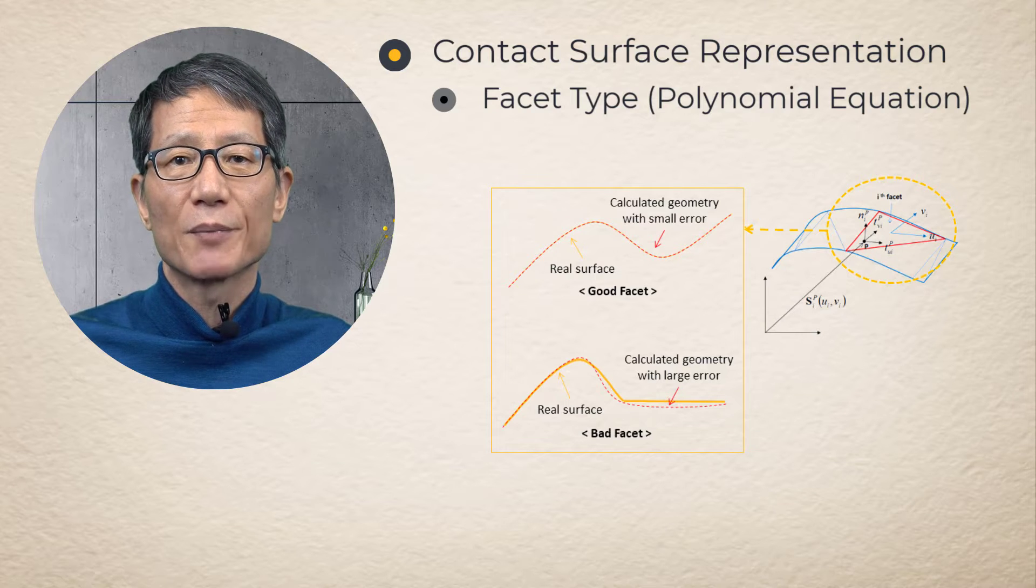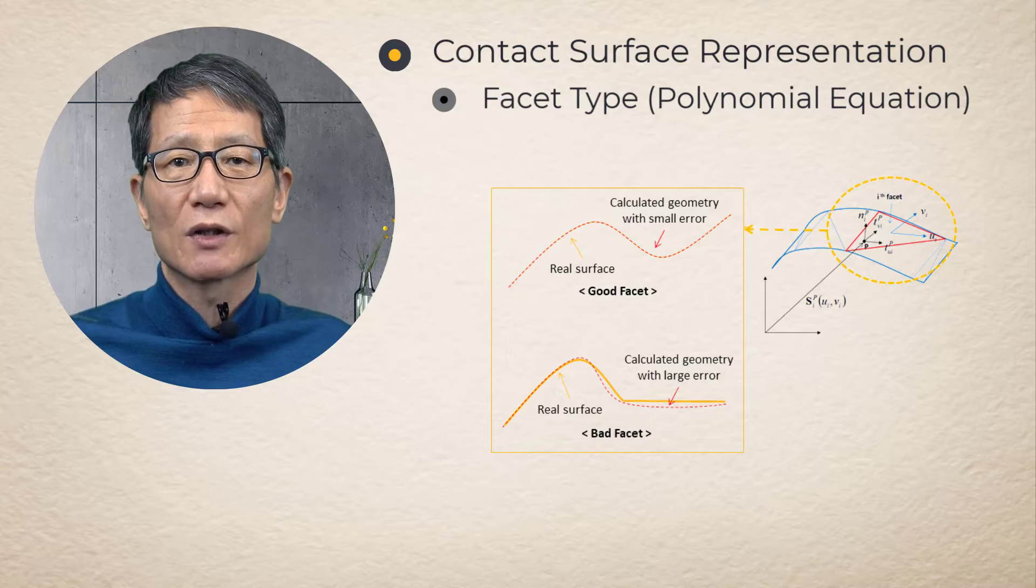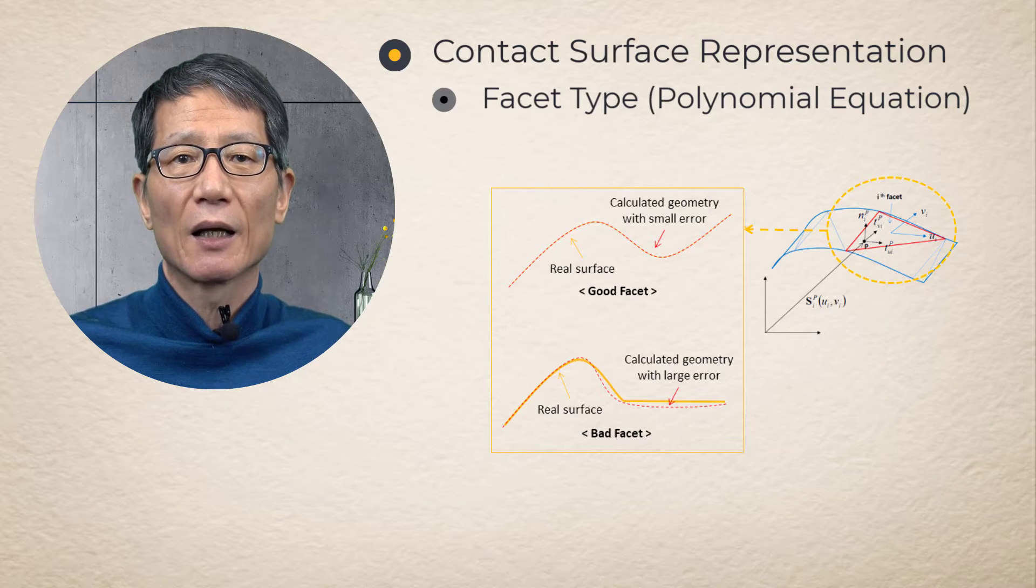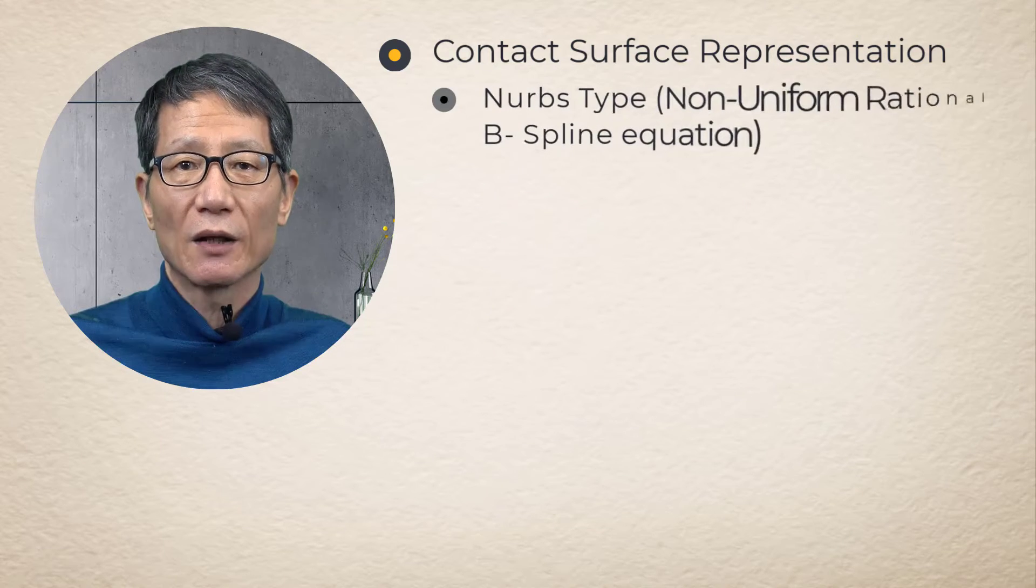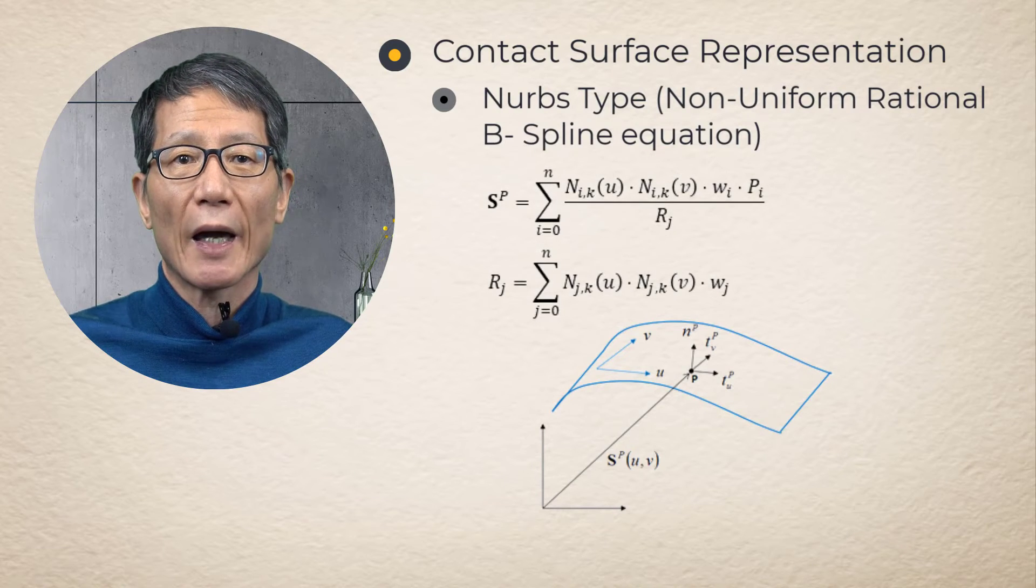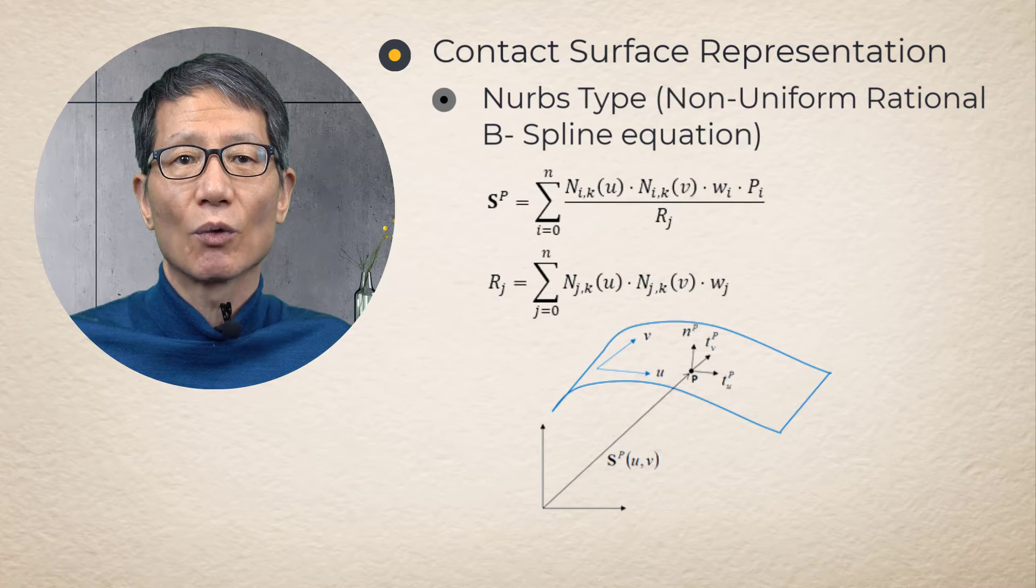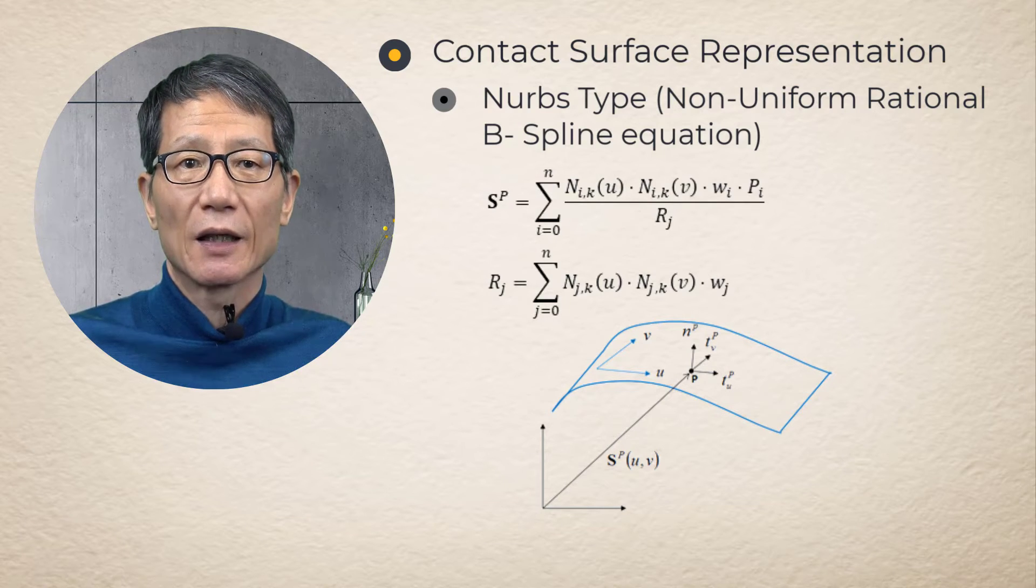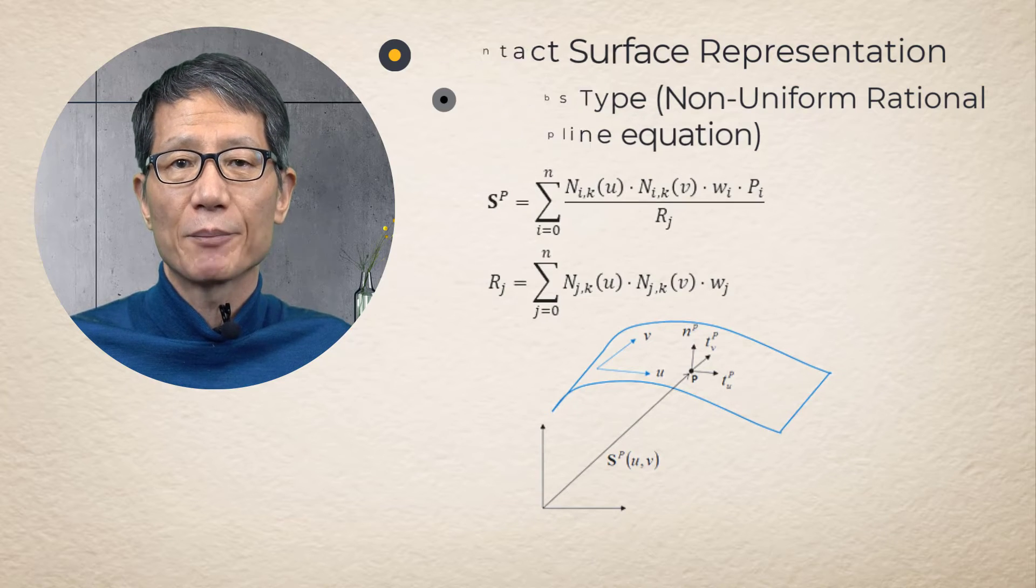Two quadratic surfaces of two adjacent patches are continuous only in position level and discontinuous in tangent level. The other type of surface representation is the original NURBS surface. This is more accurate surface representation and can be used only for rigid body. If a body is deformable, this option cannot be used.